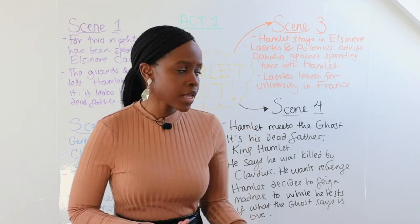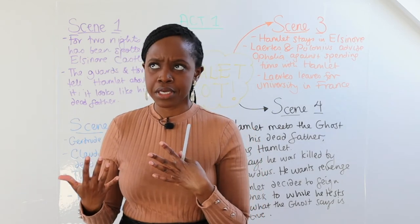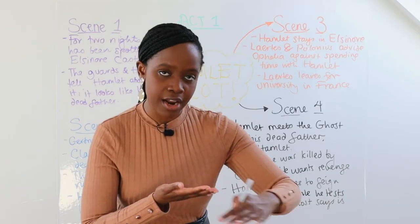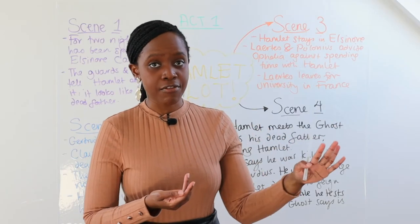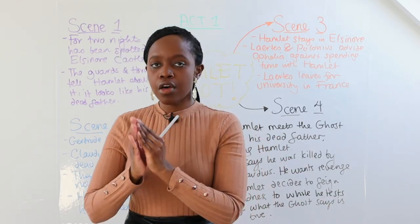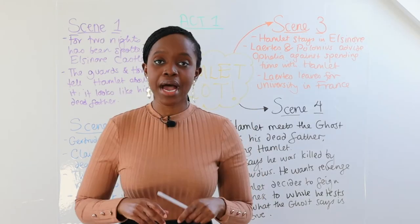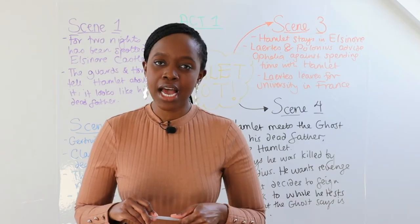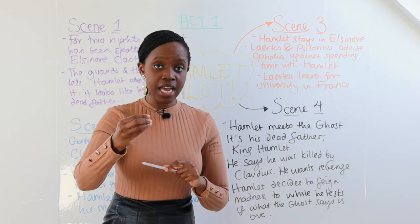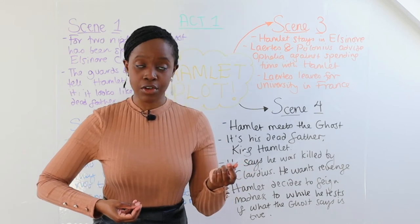Hamlet is shocked by this revelation, but it starts making sense — how was Claudius so quick to marry his mother and ask him to forget about his father's passing? On one hand, Hamlet seems to trust and be swayed by what the ghost says. However, he also has a mistrust of the ghost, so he decides to feign madness — to act mad — as a way to entrap Claudius and possibly trick him into revealing whether he did kill King Hamlet.